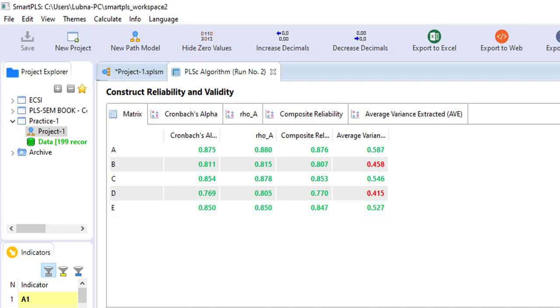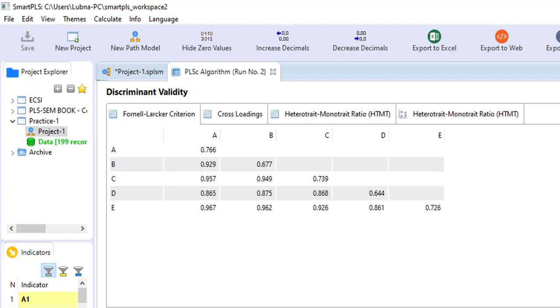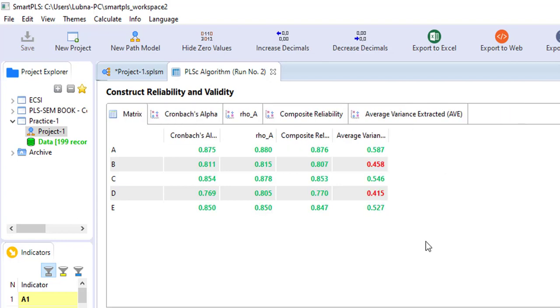The second is discriminant validity. As we all know that construct validity is divided into convergent validity and discriminant validity. So one by one we will be seeing the measures and the indicators of convergent validity and discriminant validity. Okay, so the calculations have been done. Let's see how we can interpret the output.